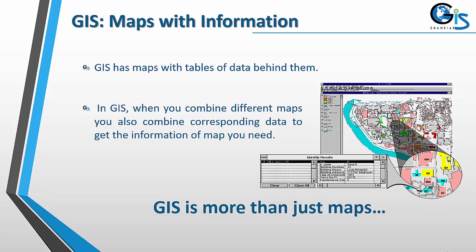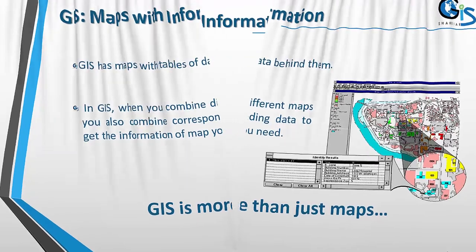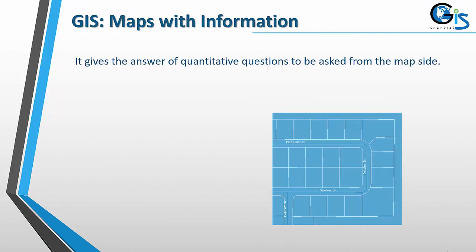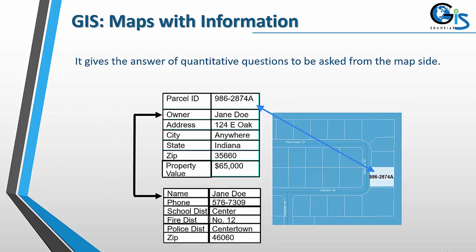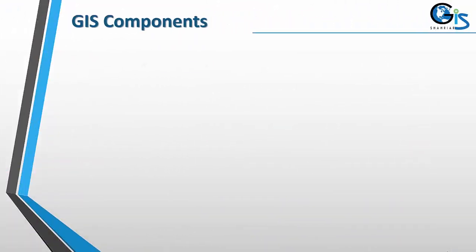GIS has maps with tables of data behind them. In GIS, when you combine different maps you also combine corresponding data to get the information you need. So GIS is more than just maps — it gives answers to quantitative questions asked from the map. For example, we can get the plot number, owner name, address, city, state, and property value. GIS contains maps with a database, and this data provides us information to answer quantitative questions. GIS also helps us join and relate one database with another.